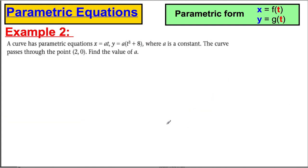Example 2. A curve has a parametric equation x equals at, so I'm going to write that down: x equals at, and y equals a multiplied by t cubed plus 8. The curve passes through the point (2, 0). Find the value of a. Now, it says a is just a constant, it's not a variable or parameter here, a is just a constant. So we know the curve passes through (2, 0), so when x is 2, y is 0.